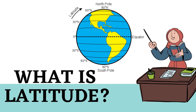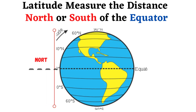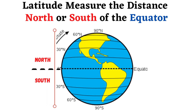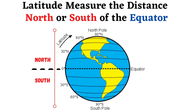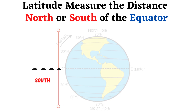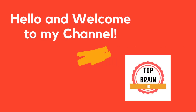Have you always heard about latitude and longitude lines but still don't know what they are exactly? Today we will cover the topic of latitude — what is latitude and what are the major lines of latitude. In simple words, latitude measures the distance north or south of the equator. Latitudes are horizontal imaginary lines on Earth.